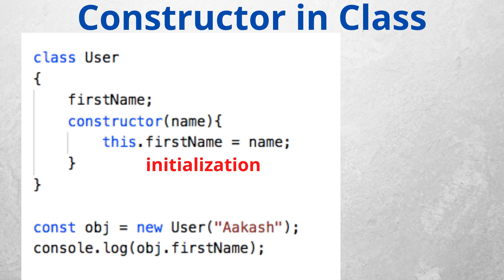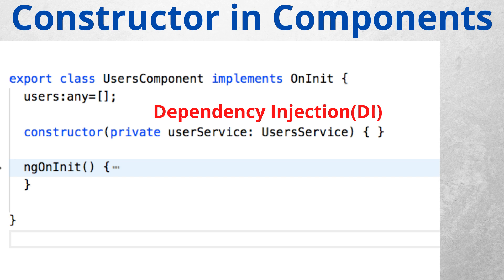Every class has a constructor. A constructor is a special method called whenever we create a new object — people coming from an object-oriented background have already used it. This is a feature of TypeScript itself, an object-oriented design concept. In general, a constructor is used to initialize class members. But in Angular components, we don't use the constructor for initialization — we use it to inject dependencies. That's why it says 'DI — dependency injection'. Angular always executes the constructor method first, then all lifecycle hooks come into the picture. So ngOnInit is where we put class member initialization.